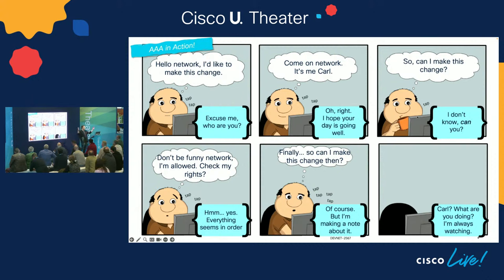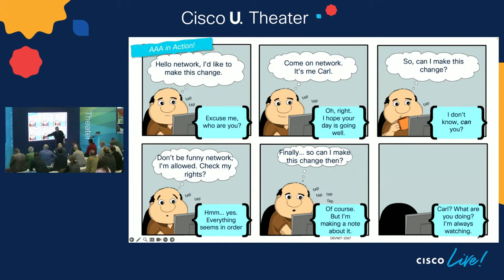Carl says, 'Come on, I'm Carl, you know who I am.' And the network says, 'Oh, that's right.' Carl comes back and says, 'Can I make this change?' And the network, feeling a bit snarky, says, 'I don't know, can you?' Carl says, 'Come on, check my credentials, check my rights.' The network says, 'Yeah, everything seems in order, I think we're in good shape.' Finally Carl asks, 'Can I make the network change?' And the network says, 'Sure, but I'm making a note — I remember that you did that. The network is always watching.'